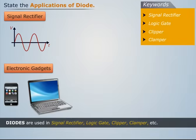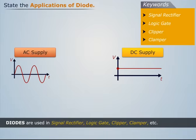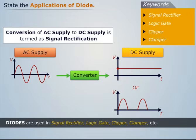Conversion of AC supply to DC supply is termed as signal rectification, and the device which performs signal rectification is known as a signal rectifier.